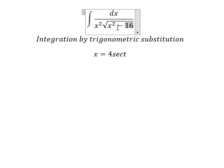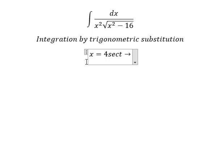We change secant squared minus 1 to tan squared t, and later we simplify the square root. For dx, we need to take the first derivative of both sides, and we have 4 secant t tan t dt.